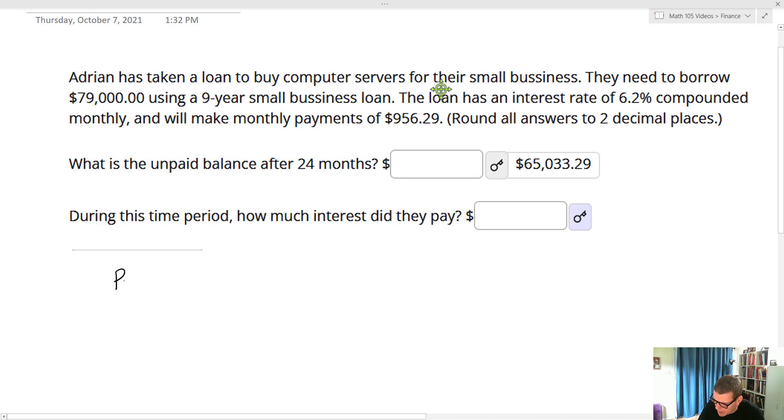And so here's our formula for that. It's going to end up being P equals, that's the principal, that's the thing we're looking for, D, that's your monthly payment, times 1 minus 1 plus R over 12 to the negative 12T, and T is in terms of years, all divided by R over 12. And so what we need to do, the first thing we need to do is we need to figure out what these values are. So D, my monthly payment, is $956.29. R, my rate, is going to equal 0.062. T, now T is going to be a little bit different. We're looking for the unpaid balance after 24 months. So 24 months is two years. So our T in this case is actually going to end up being 9 minus 2, which equals 7.